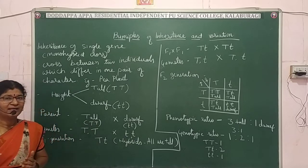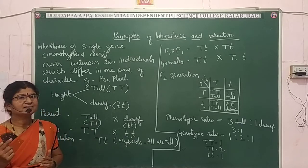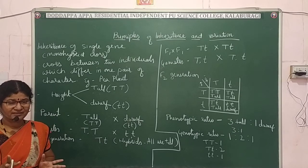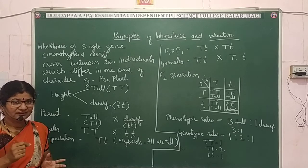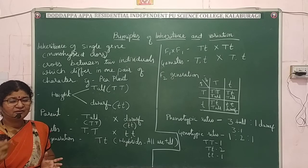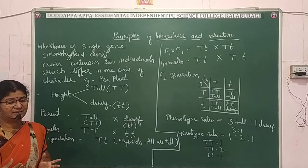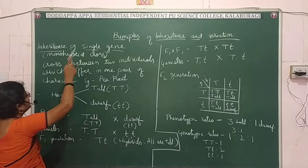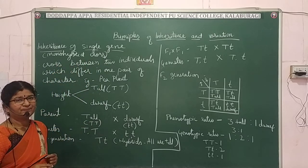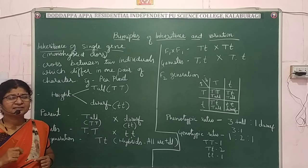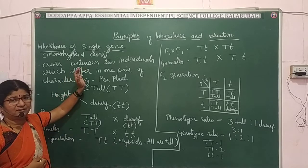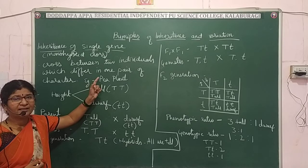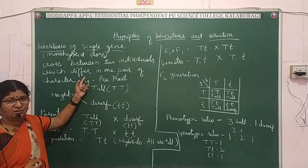Let us see his experiment where he considered only one character at a time. When he did the cross, he concentrated only on one character among the seven — considering how that character will get inherited from one generation to the other. This is the inheritance of a single gene, also called monohybrid cross. It is a cross which involves breeding between two individuals which differ in one pair of contrasting characters.